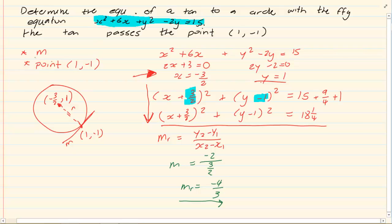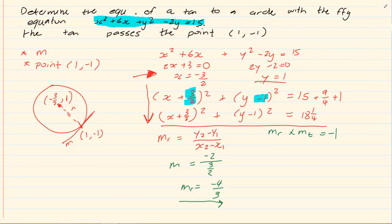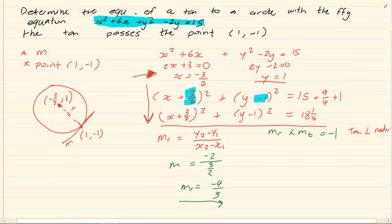This is M of R. How do I get M of my tangent? We know M of R times my M of the tangent is going to equal to negative 1. Why? Because it's tangent perpendicular to radius. So from that we know that M of the tangent is going to equal to 3 over 4.